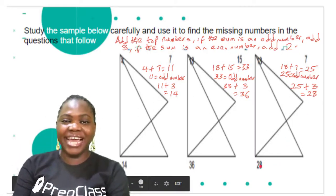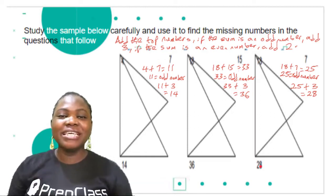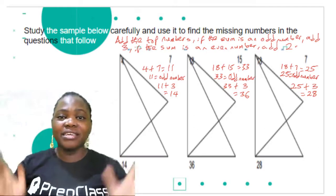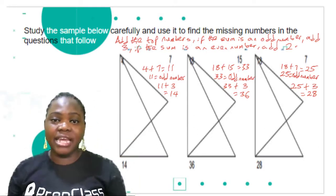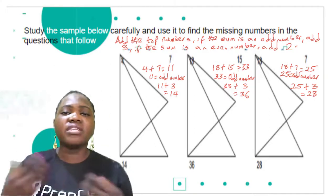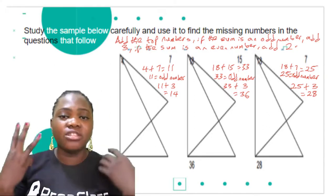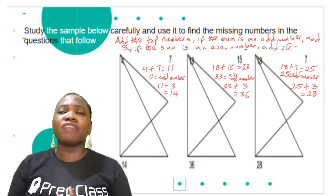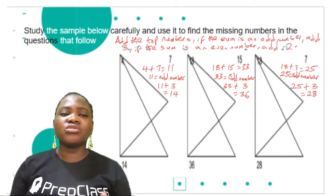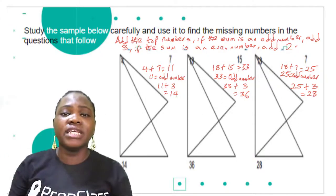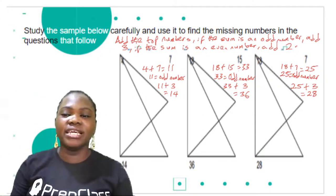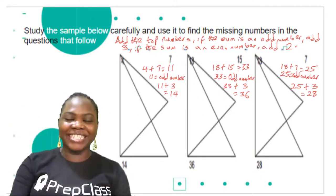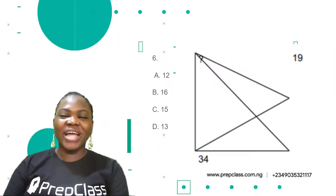You can see 28 at the bottom. So all we have to do is add the top numbers. If the sum is an even number, you add two. If the sum is an odd number, you add three. Study the samples carefully and you'll be able to answer the questions that follow. Now let's go ahead and answer the questions — question 6.